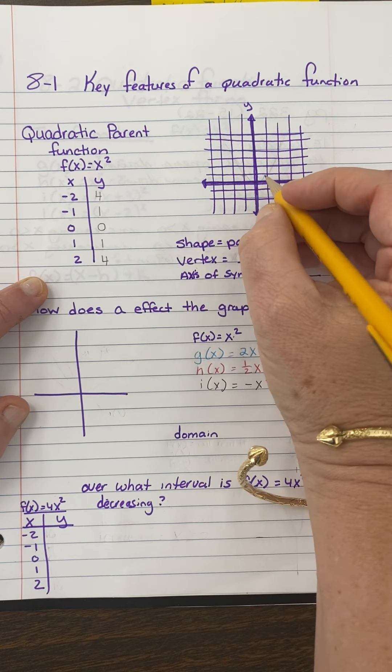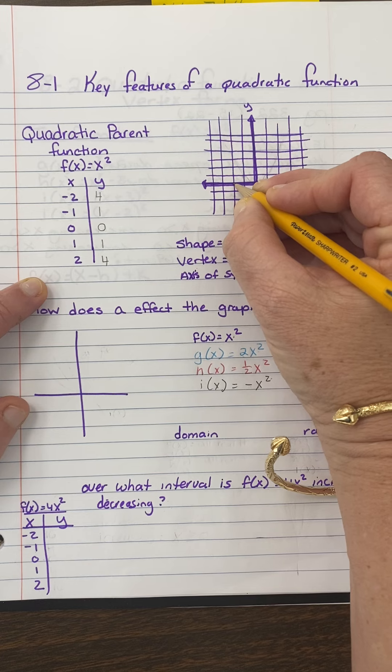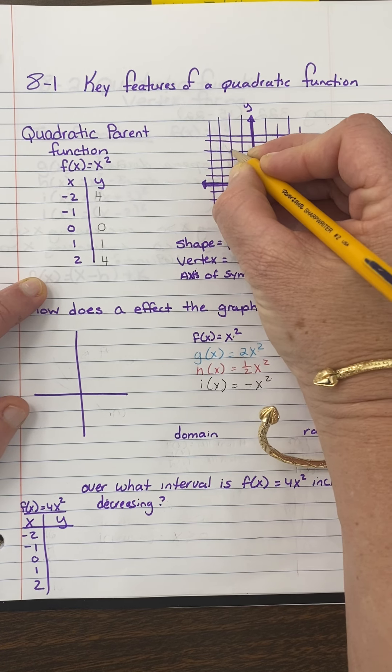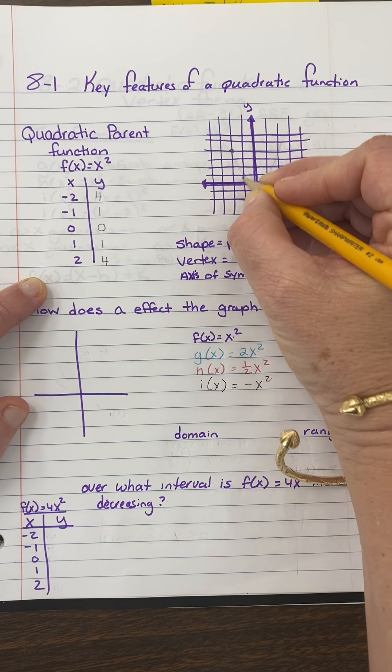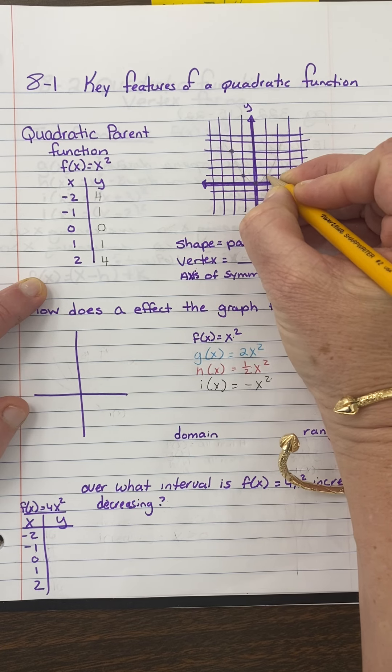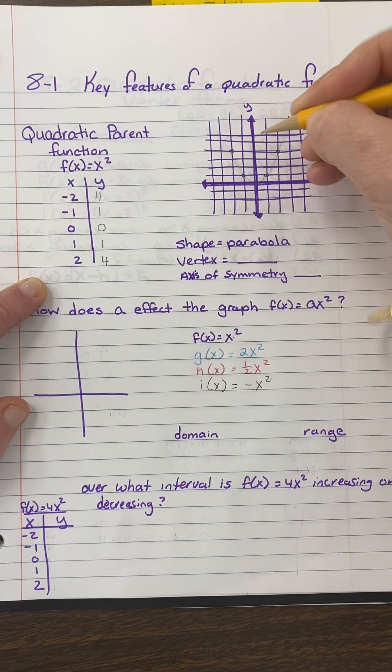So now I'm going to plot these points of the parent function: negative 2, 4; negative 1, 1; 0, 0; 1, 1.